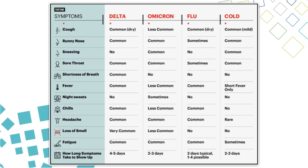This slide compares symptoms across COVID variants — Delta and Omicron — as well as flu and cold. Symptoms differ significantly between variants. Upper respiratory symptoms including sneezing were common in Omicron but not in Delta. On the other hand, respiratory symptoms like cough were less common in Omicron compared to Delta, and loss of smell was also less common in Omicron compared to Delta. Even the prevalence of symptoms differs according to the COVID variant.